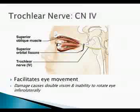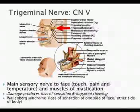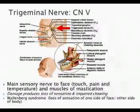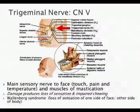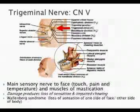CN4, the trochlear nerve, also passes through the superior orbital fissure and deals with eye movement. CN5, the trigeminal nerve, is interesting in that it has three branches going to three different parts of the face, dealing with sensory information around the face and muscles involved in chewing. Its branches pass through the foramen rotundum and foramen ovale — structures we learned about on the sphenoid.